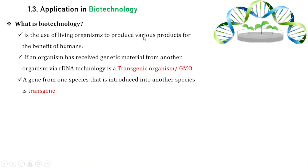If an organism has received genetic material from another organism or species through recombinant DNA technology, it is called a GMO — a Genetically Modified Organism. The transfer of a gene makes it a transgenic organism, which is a naturally or genetically modified organism.